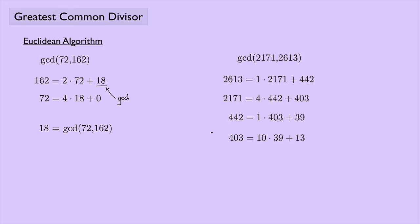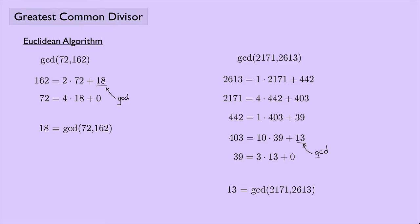So we have to keep going. We take the 39 and see how many times 13 goes into it — and now we have a remainder of 0. 13 goes into 39 three times with a remainder of 0. We look at the last non-zero remainder, which is 13, and so that is going to be the GCD. The greatest common divisor of 2,171 and 2,613 is 13.